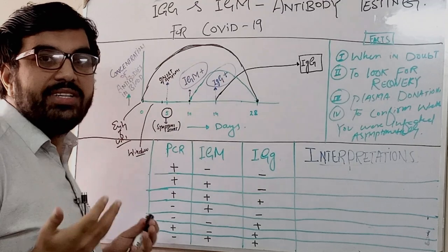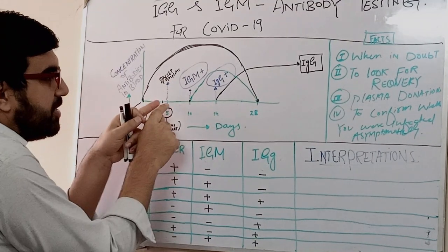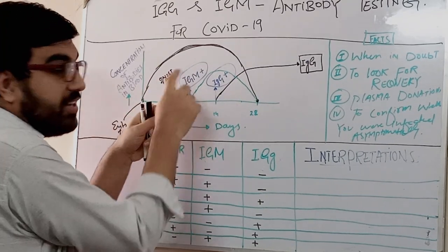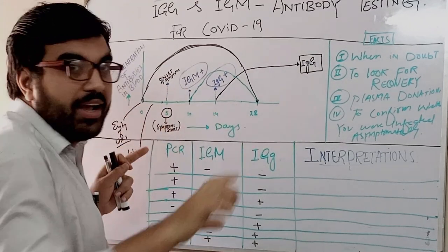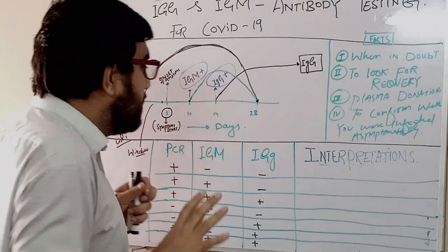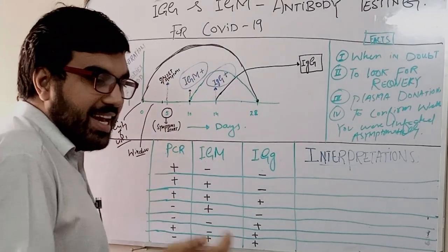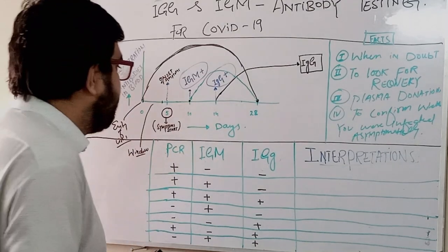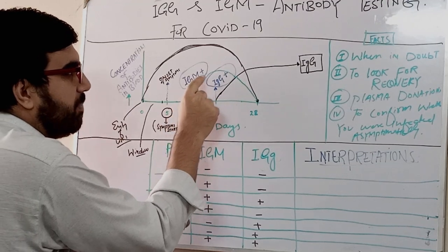IgM appears in the blood five days after the onset of symptoms, which is the 10th day of the total cycle. So if you test for IgM before five days of symptom onset, you will get a false negative result, because there is no IgM production at all at that point.